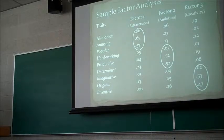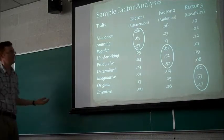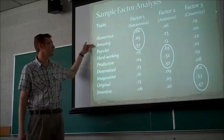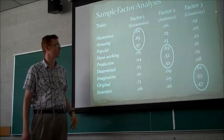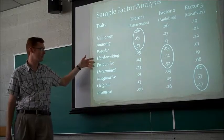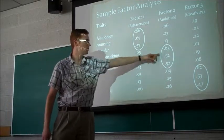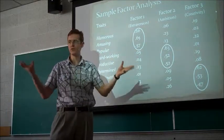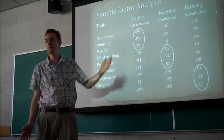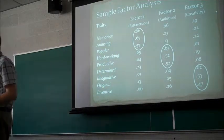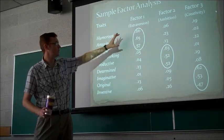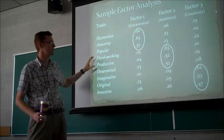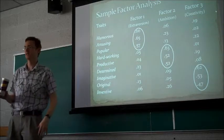And so that's, we said extroversion for that one perhaps. So if you're measuring how humorous, amusing, and popular someone is, those would all go into that trait of extroversion. Hardworking, productive, and ambitious, those all tend to correlate together with some abstract trait. We'll call that trait ambition. And so again, the factor analysis is used to look for clusters of similar items within a matrix like this.